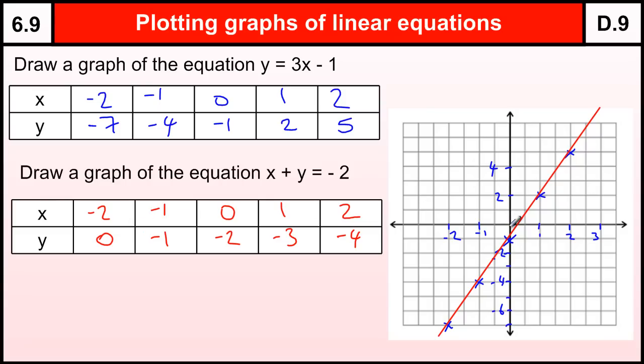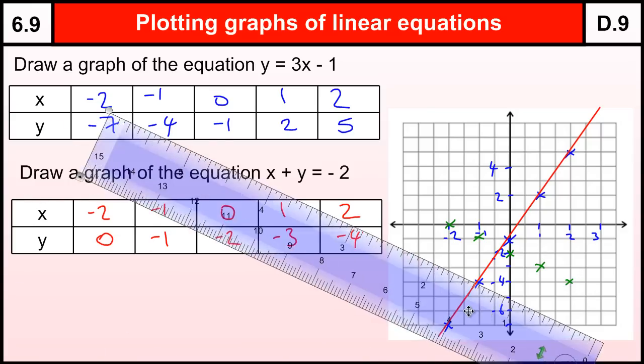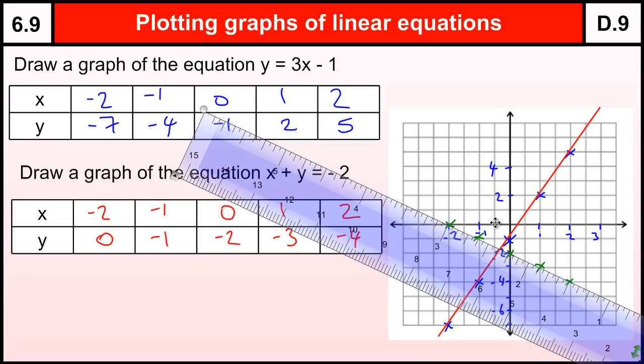Minus 2, 0, so minus 2 across, 0 down. Minus 1, minus 1 is going to be there. 0, minus 2. 1, minus 3. And 2, minus 4. OK, now get a ruler to draw a line through those points. And there we go.